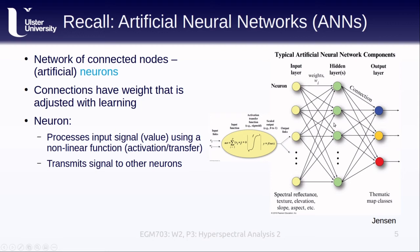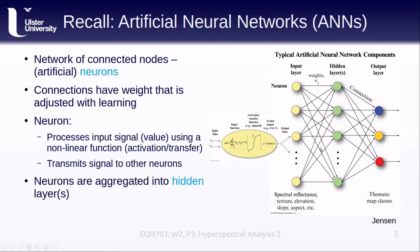Once the neuron transmits the signal to other neurons, they can move on to the next layers in the network. Eventually, from our initial inputs, we have outputs that are, at least in our case, thematic map classes — at the end of this, we have a classified map.